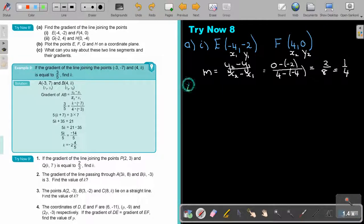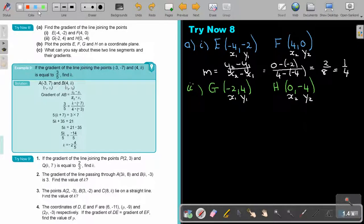And if I go to the next one, it's g, negative 2 and 4, and h, 0 and negative 4. Again, this is x1, this is 0.1 and this is 0.2. I start again with my formula.